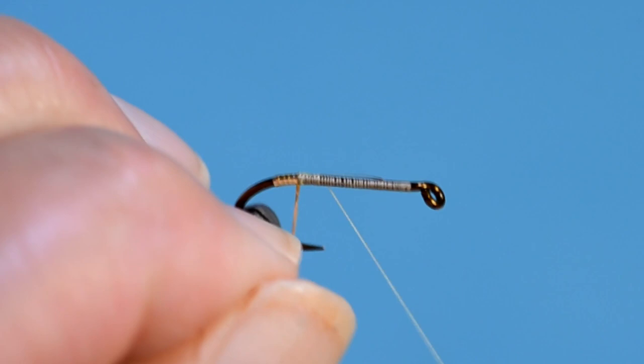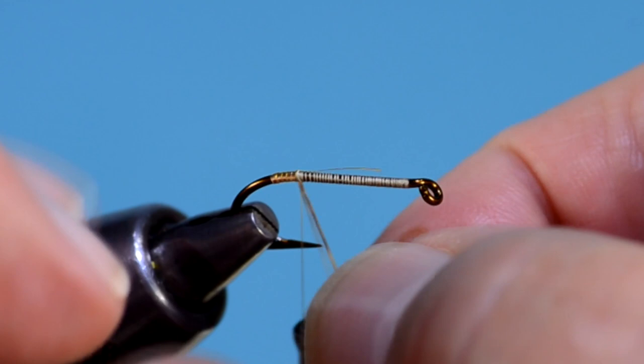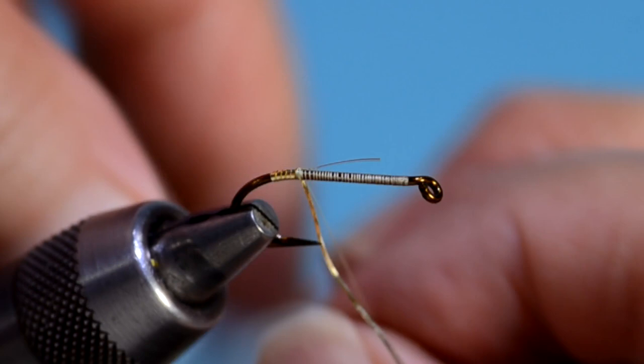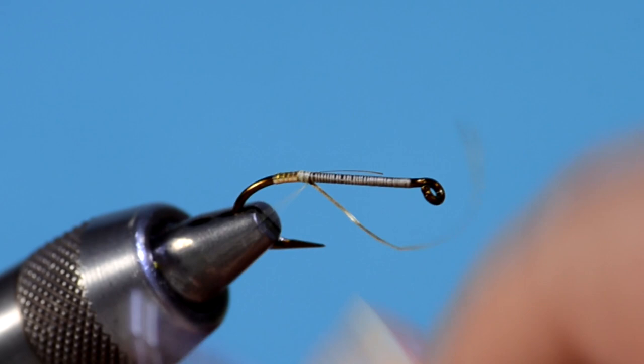I bind everything down underneath the hook. I'm backing off the thread to get back to where I started originally. The idea there is to cut down some of the bulk at the rear of the body of the fly.